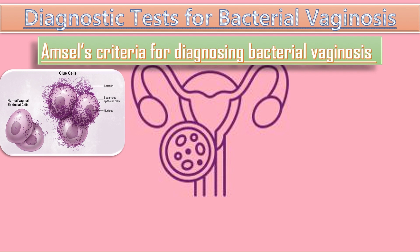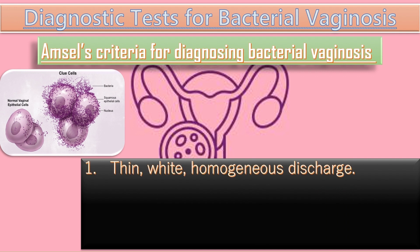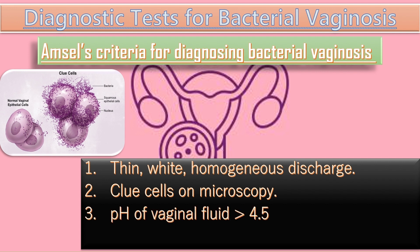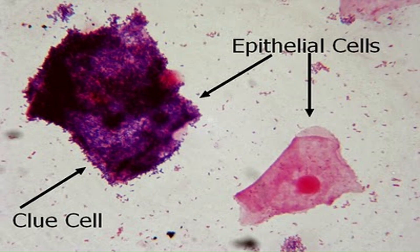According to the Amsel criteria, at least three out of four criteria should be present for the diagnosis to be confirmed: firstly, thin white homogeneous discharge; secondly, clue cells on microscopy; thirdly, pH of vaginal fluid more than 4.5; and fourthly, release of a fishy odor on adding alkali — 10% KOH. This whiff test is rarely performed these days.